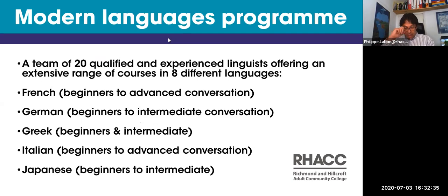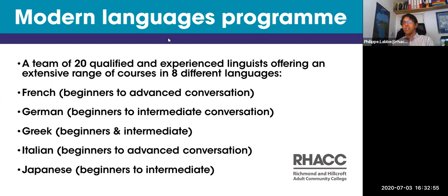Let me tell you a little bit more about our Modern Languages program. For those of you who've never come to Richmond and Hillcroft Adult Community College, we have an extensive program of languages. We're a team of 20 qualified, experienced linguists offering an extensive range of courses in eight different languages. We are all native speakers or near-native speakers, and we have secondary school teachers, adult education teachers, and university teachers.